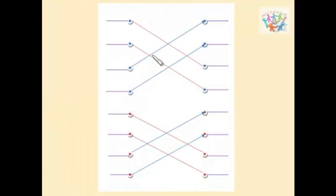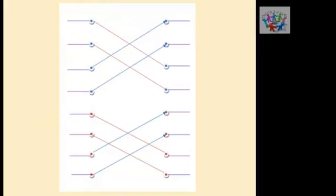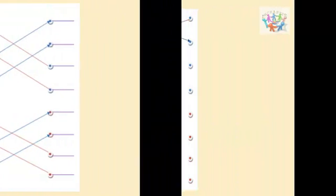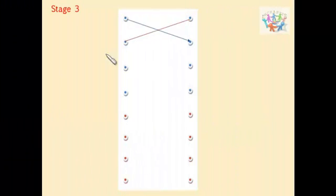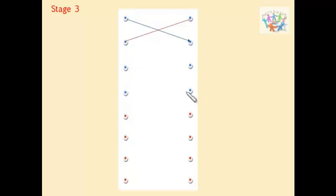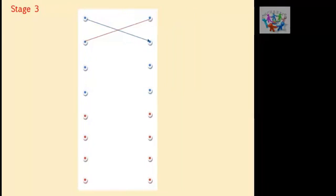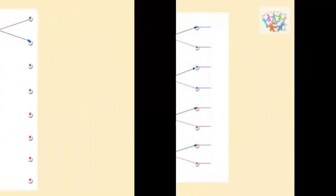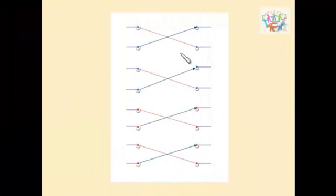For stage 3, we will have 4 X-shaped butterflies: these 2 points form the 1st X, these 2 form the 2nd X, these form the 3rd X, and these form the 4th X. After joining we will have 4 X's.